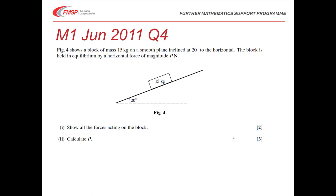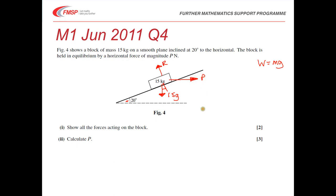We've got a block of mass 15 kilograms on the plane. You can draw a separate diagram or label the diagram you're given. The weight would be mg, so I'll just leave that as 15g. Remember, this angle here will be the same as the angle at the bottom — so that's 20 degrees. We'd have a normal reaction acting perpendicularly to the slope. The block is being held in equilibrium by a horizontal force of magnitude P. Part one asks us to show all the forces acting on the block.